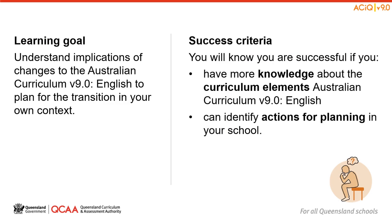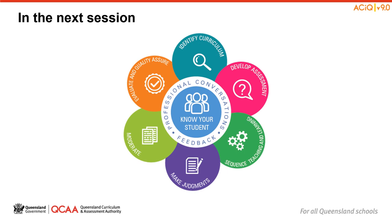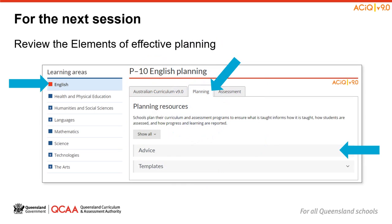As the session comes to a close, let us reflect on our learning goal and success criteria. We have built our knowledge about Australian Curriculum version 9 English and identified some actions for planning in our particular school context. That concludes the second session and our discussion on the Curriculum Elements section of Australian Curriculum version 9 for English. In the final session of our series on Familiarisation and Planning, we will be discussing how to plan with the Australian Curriculum version 9. On screen, you will see an infographic that is part of our Elements of Effective Planning resource, which you may wish to access to familiarise yourself with its contents prior to the next session. On screen, you can also see where this resource is available on the QCAA website.